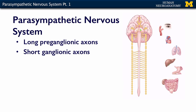The preganglionic neurons of the parasympathetic nervous system live within the brainstem and the sacral cord, and they have very long axons because they're leaving the CNS and going out to synapse on ganglionic neurons that are in or very near their targets. For example, from cranial nerve 3, there's a ganglion that lives right behind the eye — that's where the ganglionic neurons are — and then they have a very short way to go to their target, which is the pupillary muscle of the iris.